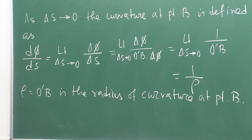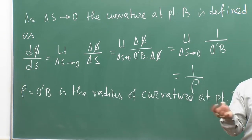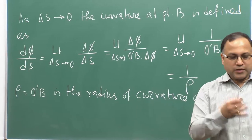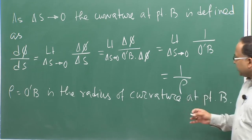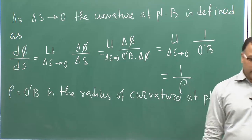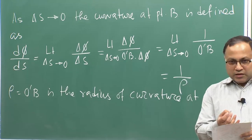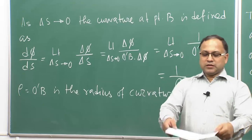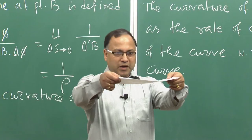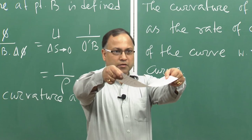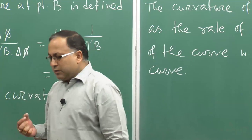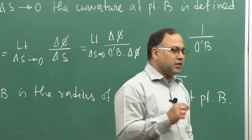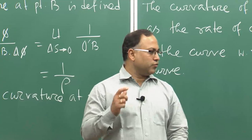This expression — 1/rho — will be frequently used to define the stress due to bending, which is why we are doing this exercise. Some recapitulation is also happening, and you will appreciate that this 1/rho term will be frequently used because the plane beam, after bending, takes the shape of some curve. Therefore, the radius of curvature is a very important parameter to define the deformation due to bending.